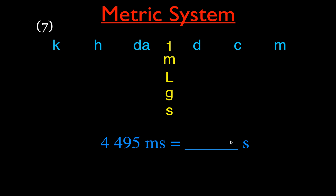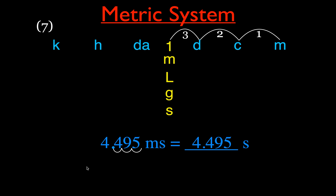Example 7: convert milliseconds to seconds. Milli is three steps to the right of the base unit seconds, so we move the decimal three places to the left. 4495 milliseconds becomes 4.495 seconds.